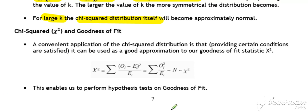If we now start to consider its relevance to goodness of fit, it is really a convenient application of the chi-squared distribution that, providing certain conditions are satisfied (we'll come to those later), it can be used as a good approximation to our goodness of fit statistic. It's actually the case that when these conditions are satisfied, our goodness of fit calculation does approximate quite closely to the chi-squared distribution.